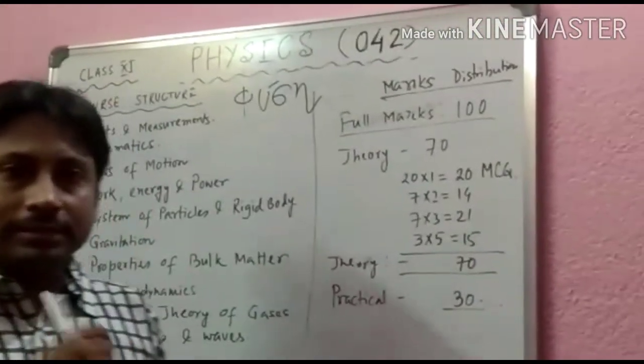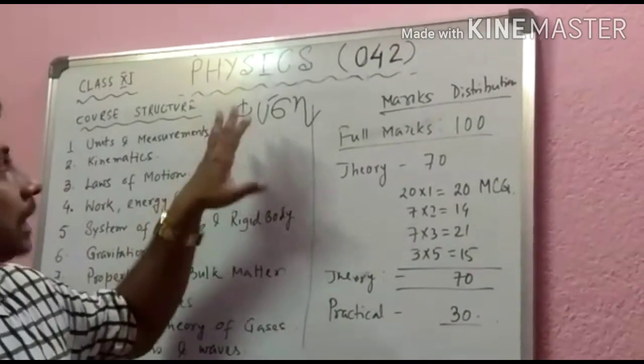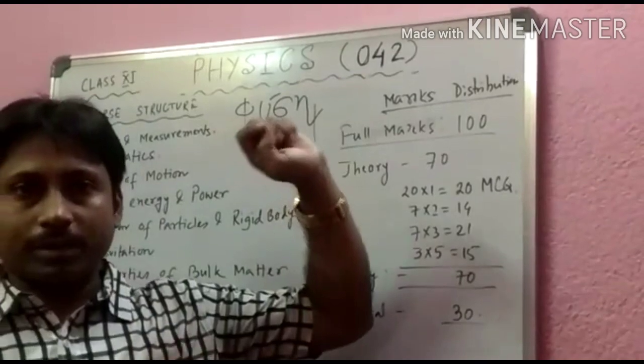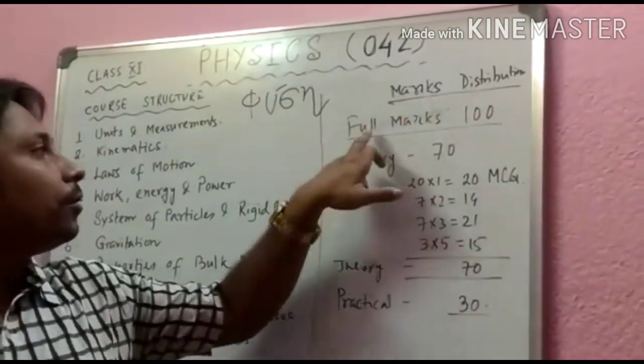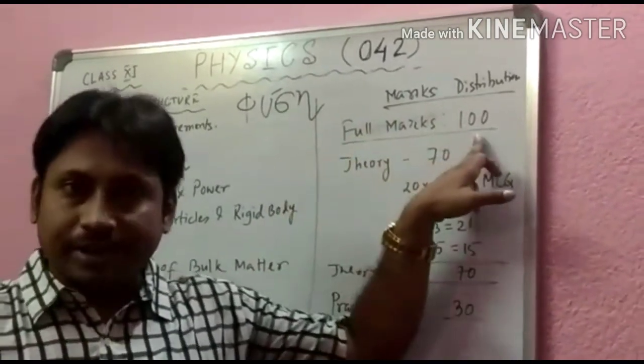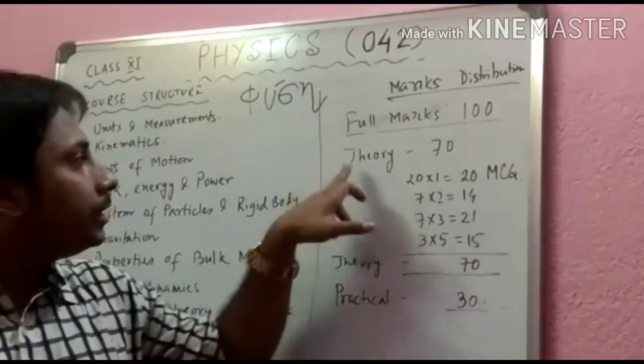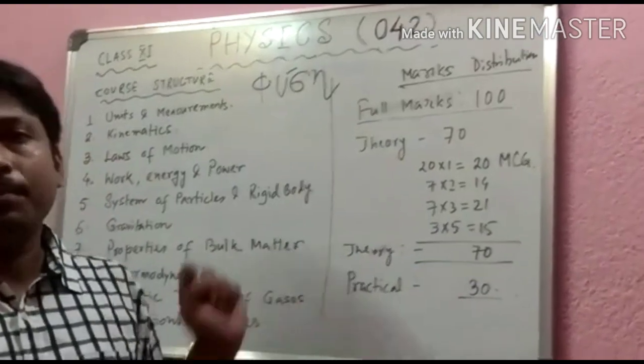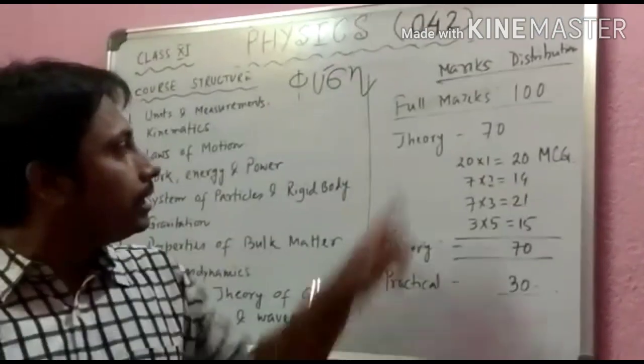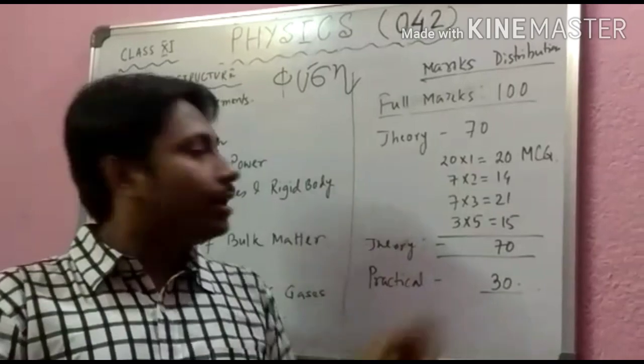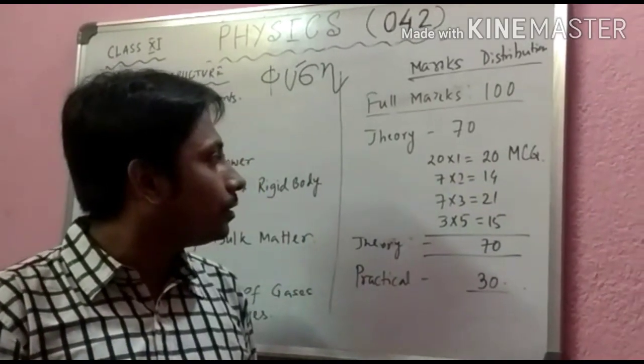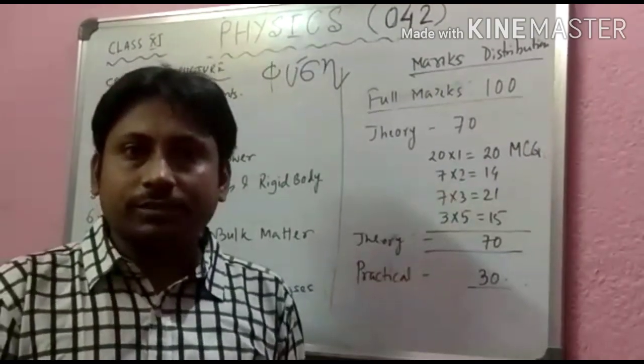Now students, in your board exam, see the subject code Physics 042, and the marks distributions are - your school marks is 100, theory is 70 and 30 marks allocated for practical. In theory 70 there will be 20 MCQ questions of one mark each.